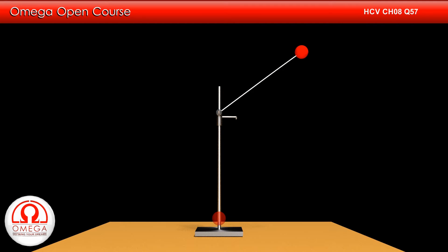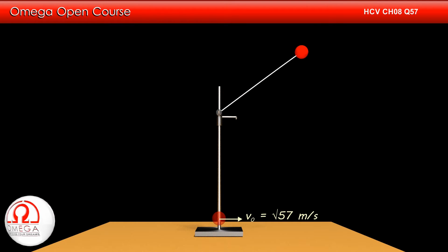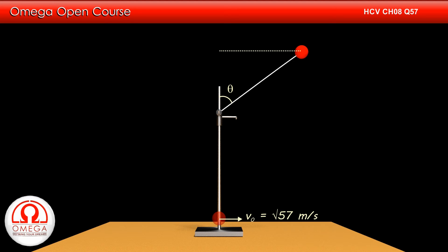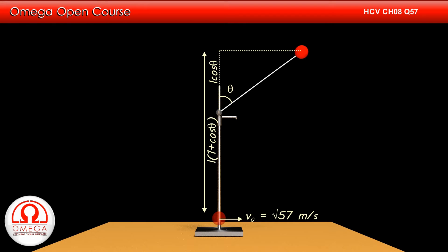Let us denote the speed of the particle at its lowest position by V₀ and the length of the string by L. Also, let the angle made by the string with the upward vertical at the instant it starts becoming slack be theta, and the speed of the particle at that instant be V. As the string makes an angle theta with the vertical, the height of the particle from the point of suspension is L cos theta. Therefore, the height of the particle from its lowest position is L plus L cos theta.